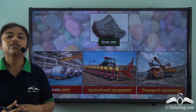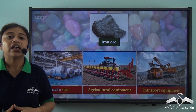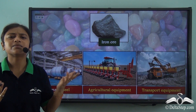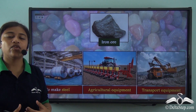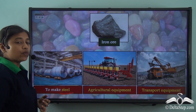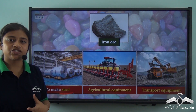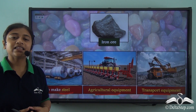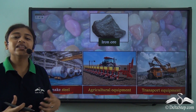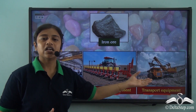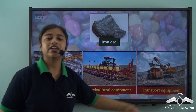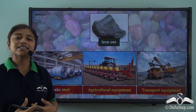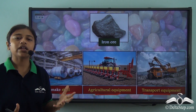Now iron ore is one of the most abundantly used mineral ores. We extract iron from the iron ore which is then used for various purposes. The iron extracted from iron ore is used to make steel, which is an important part of the iron and steel industry. It is also used to make agricultural and transportational equipment, so iron ore plays an important role in everyday purposes including agriculture, industry and transportation.